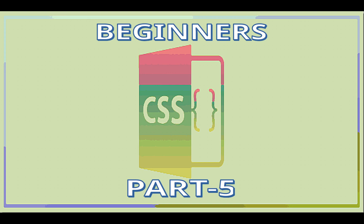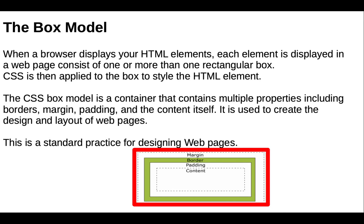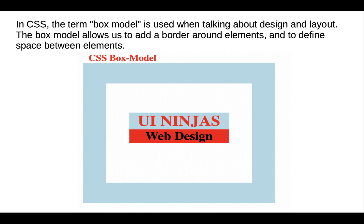Hello guys, welcome to my YouTube channel UIninjas. In this video I am going to discuss the CSS box model. When a browser displays your HTML elements, each element displayed in a web page consists of one or more rectangular boxes. CSS is then applied to the box to style the HTML element. The CSS box model is a container that contains multiple properties like border, margin, padding, and content. It is used to create the design and layout of a web page.